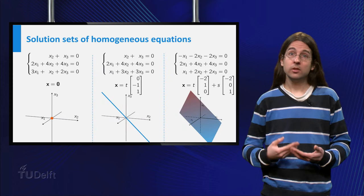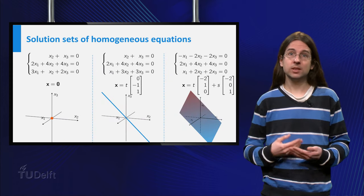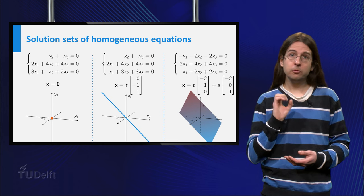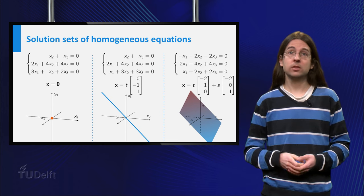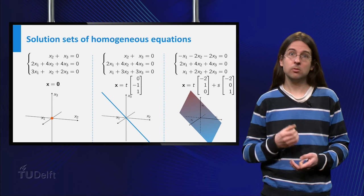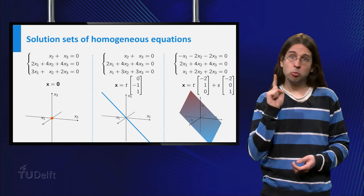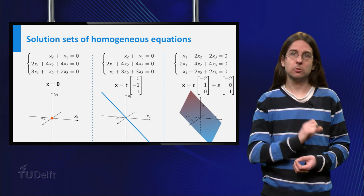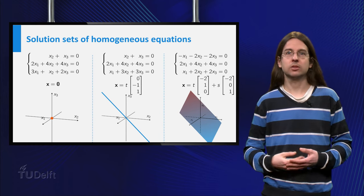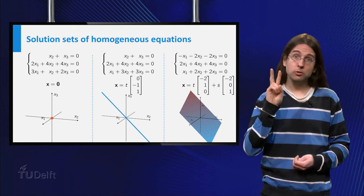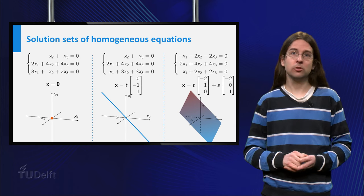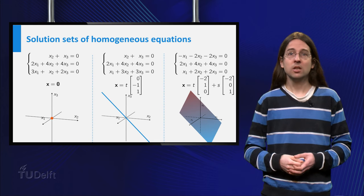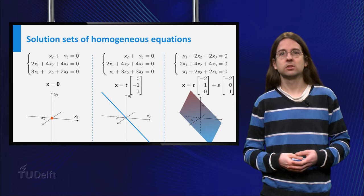In the examples you can see what some of the solution sets look like. If there are no free variables, the only solution is the trivial solution, which is the origin. If there is one free variable, the solution set is a line through the origin, just as in the previous example. If there are two free variables, the solution set consists of all linear combinations of two vectors which form a plane through the origin.